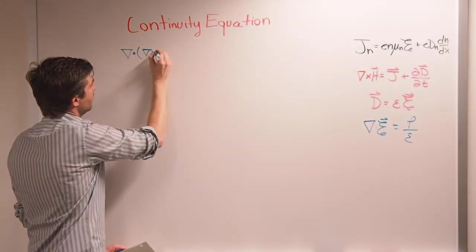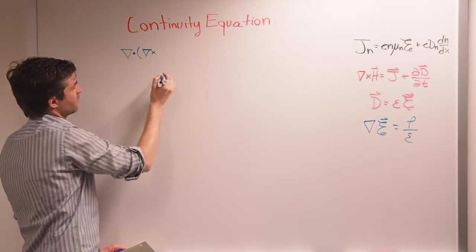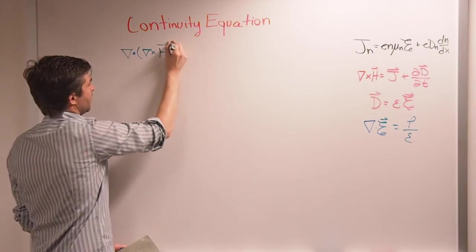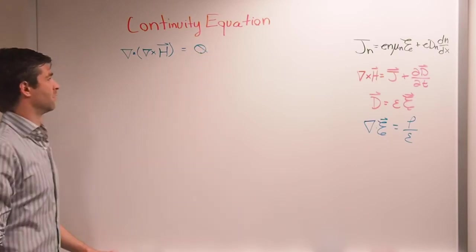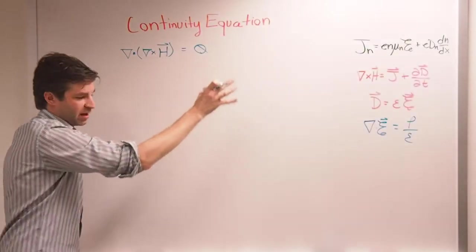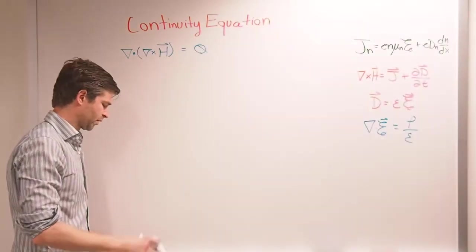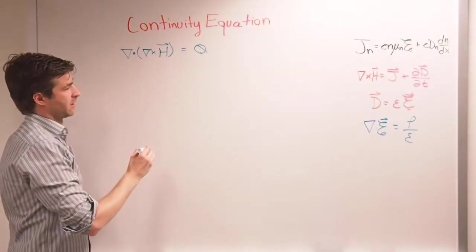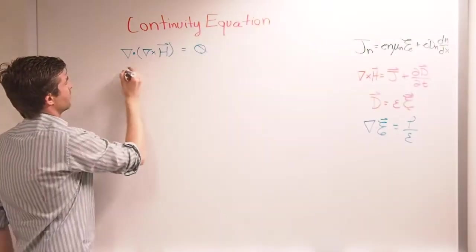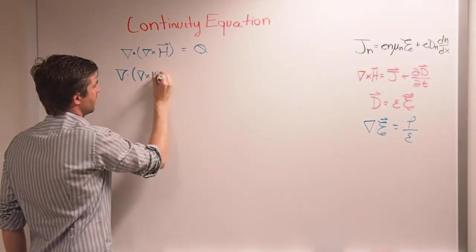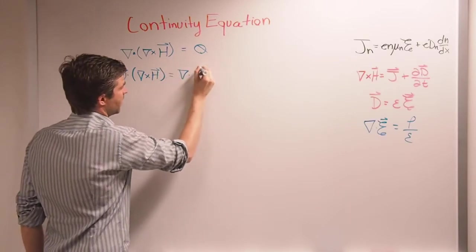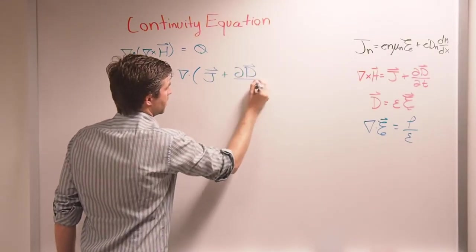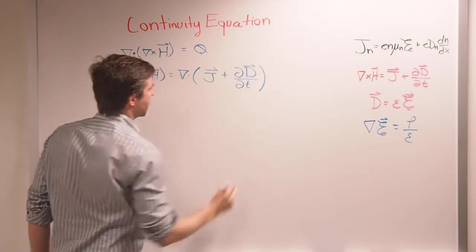So the divergence — del times anything is divergence. Curl is del cross product with any vector, say, the magnetic field density B — that's equal to zero. Knowing this and knowing Ampere's law, let's take the divergence on both sides: del dot (del cross H) equals del dot J plus del dot the change in electric flux density D per unit time.